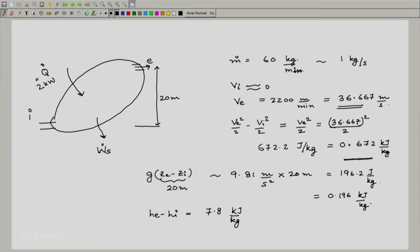the V e squared by 2 term is at least comparable to this. You can say it is at least 10 percent of it and hence, we cannot neglect this. Of course, G z e minus z i is much smaller, but still compared to 7.8, it is not that negligible and hence, we consider it.